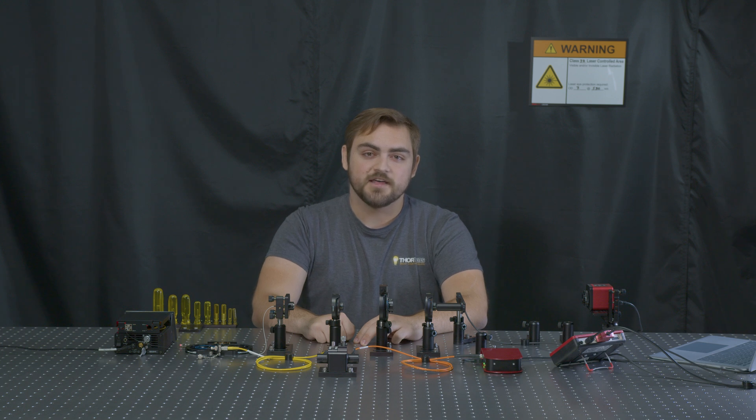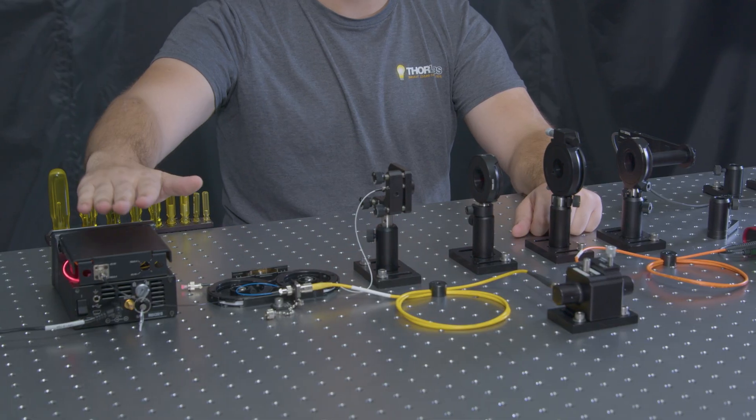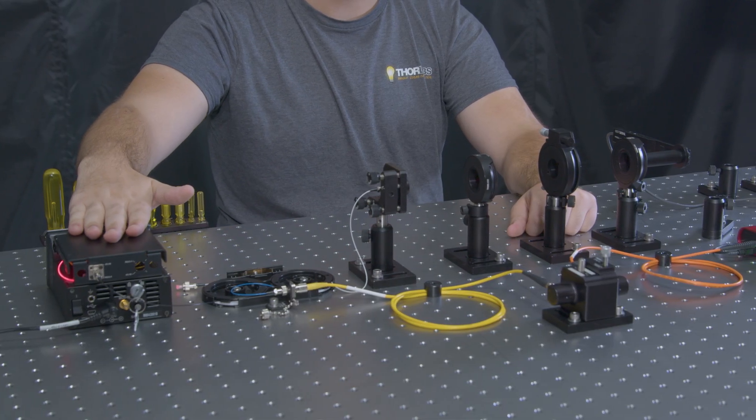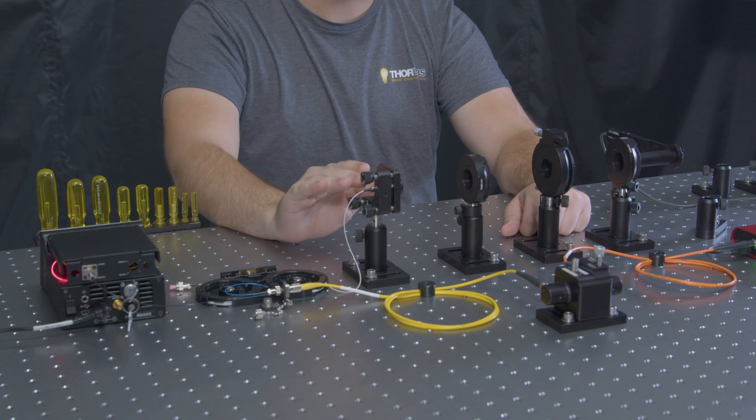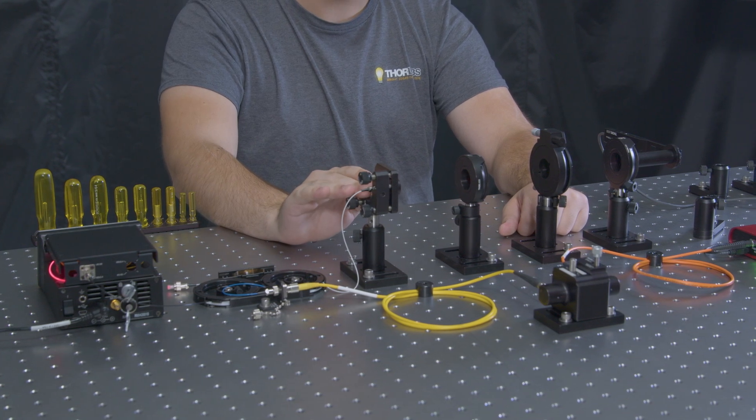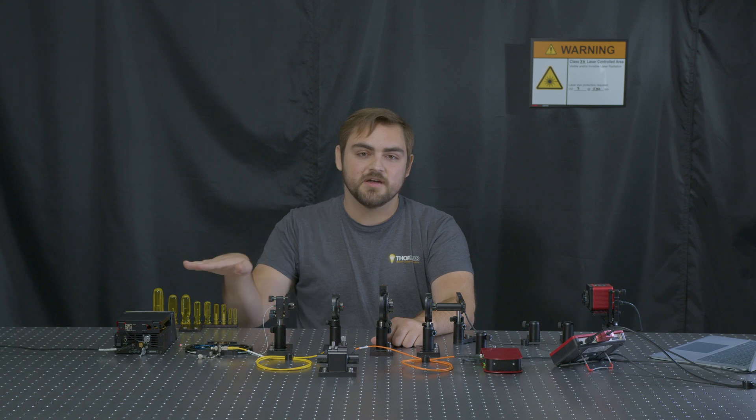Let's take a closer look at the setup we'll be using to make this measurement. Our laser's temperature has been set such that it outputs a center wavelength of 633 nanometers, and the fiber is connected to a fiber collimator in a tip-tilt mount, where the output has been aligned to be parallel to the table while traveling along a line of screw holes.